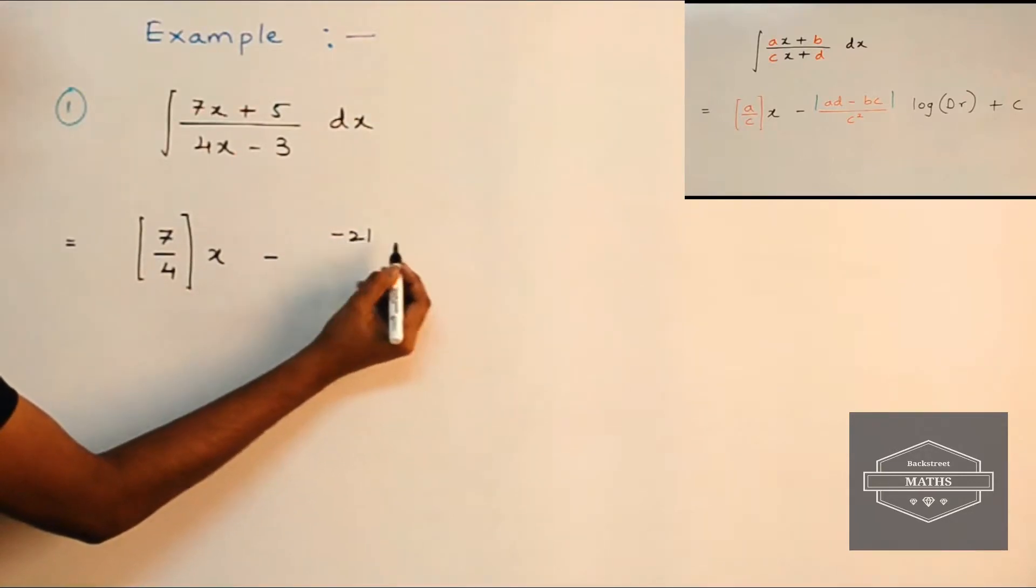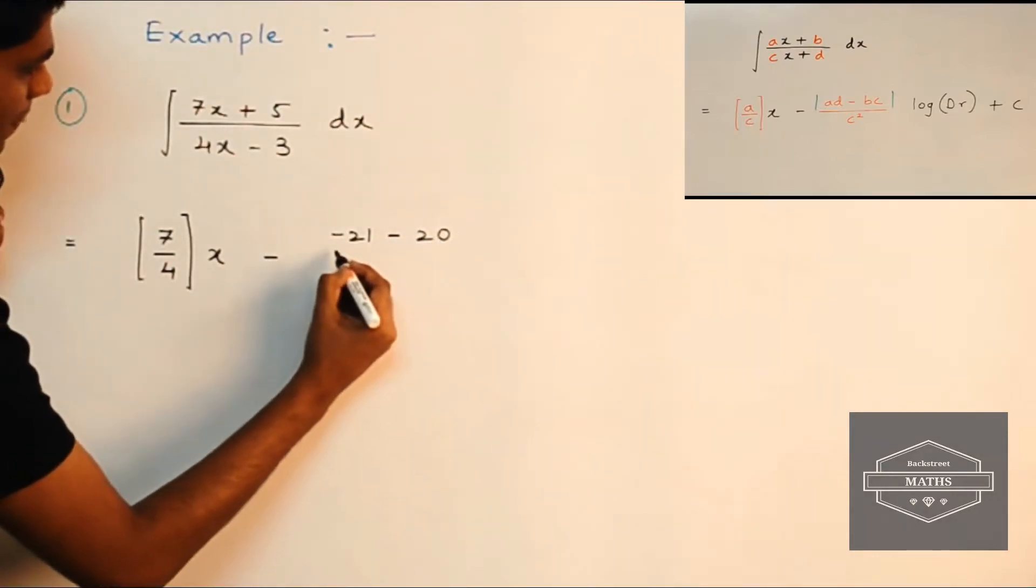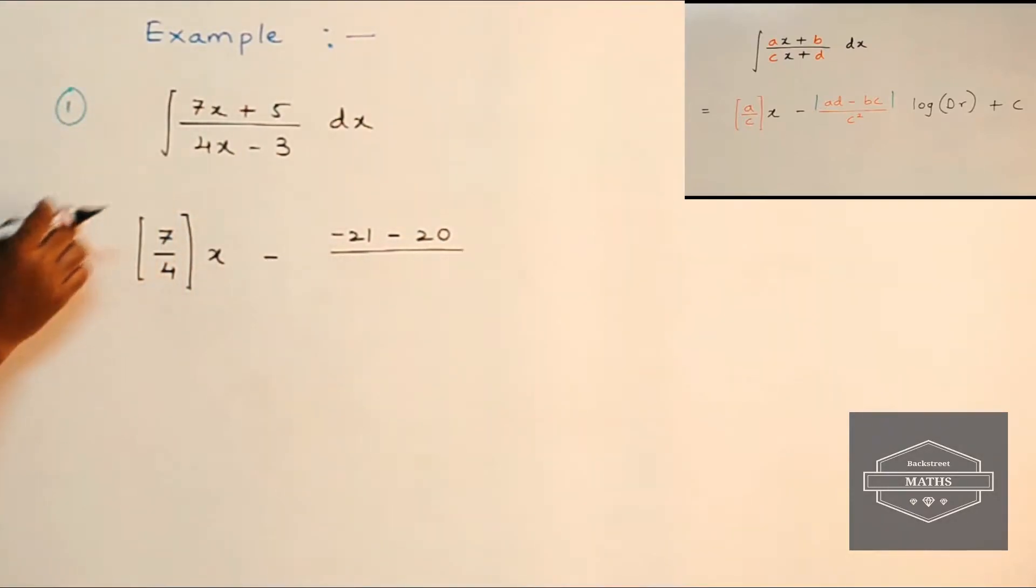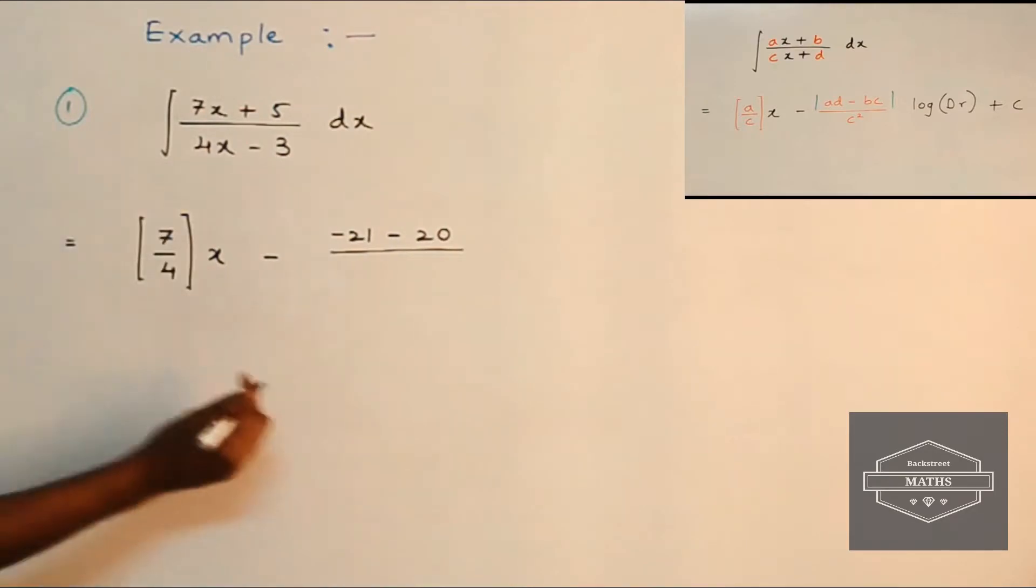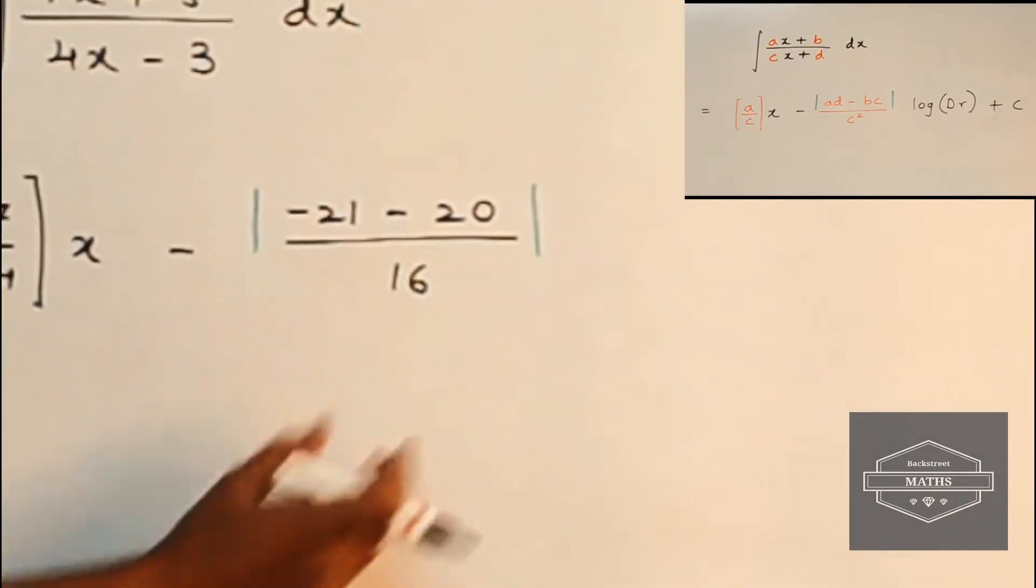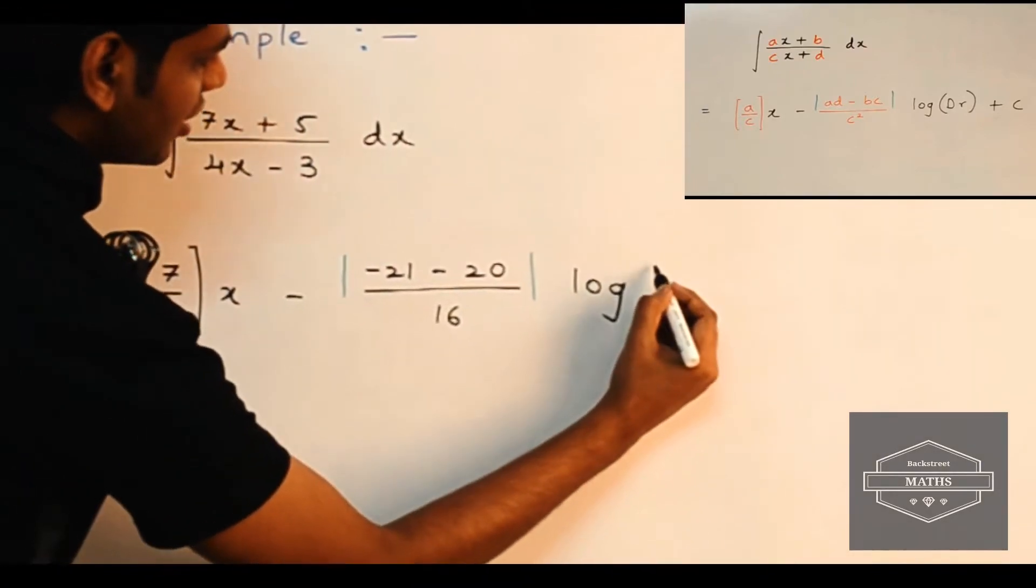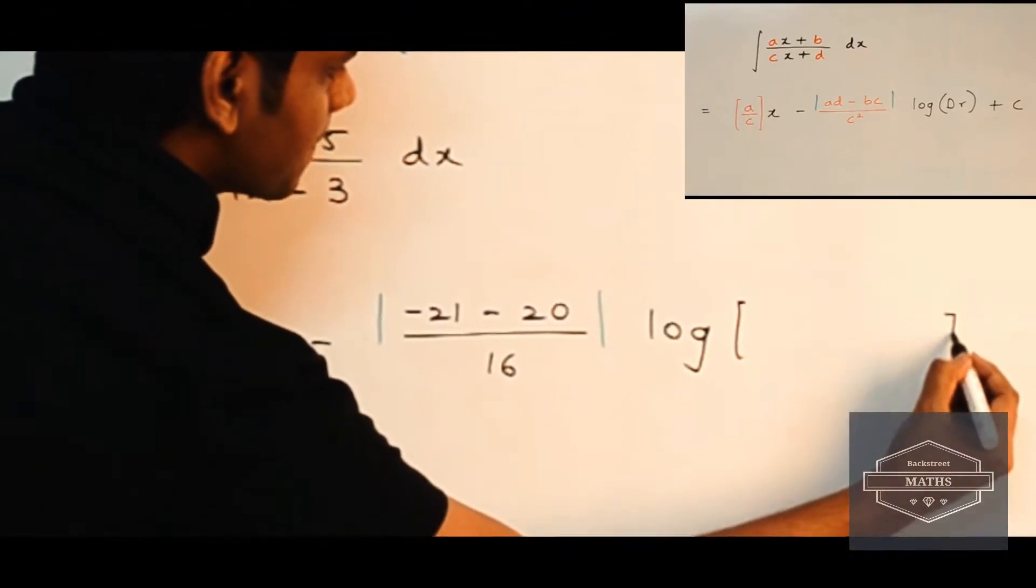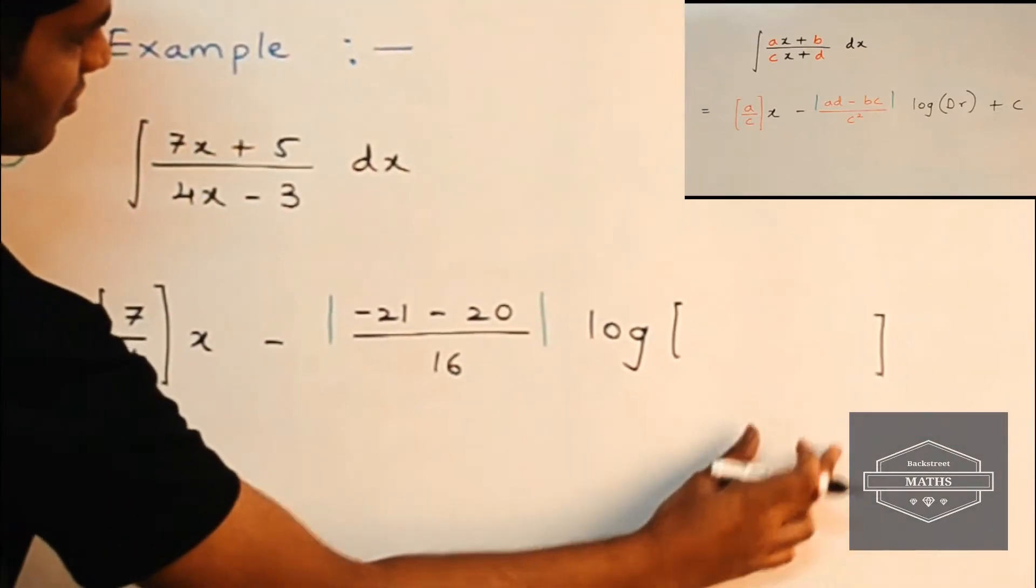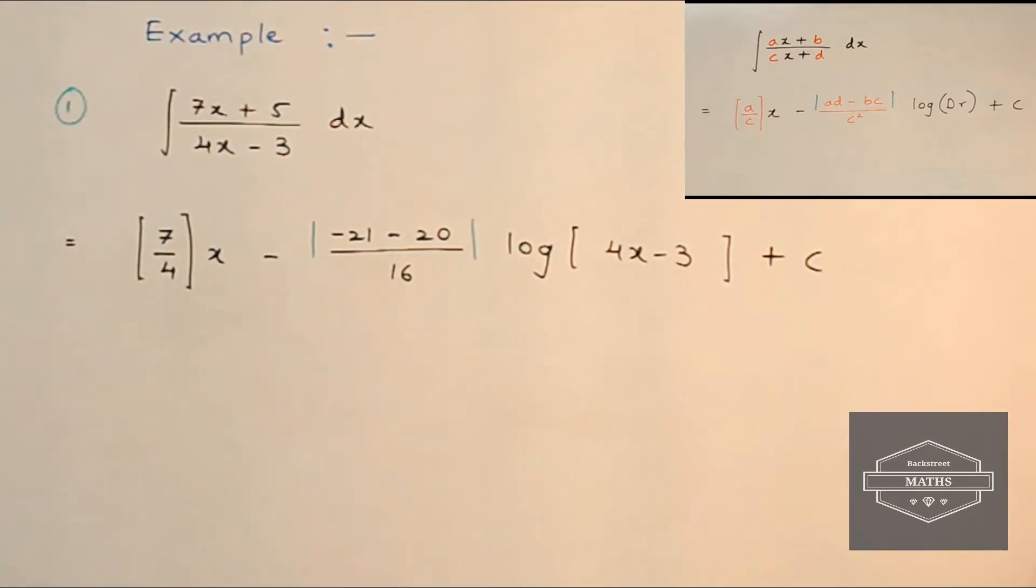In the second term we follow a crisscross pattern. So here it will be 7 into minus 3, so it will be minus 21 minus 5 into 4. 5 times 4 is 20 upon c square, so 4 squared is 16. And here we have to put a mod sign, and with the second term we multiply log of denominator. So here it will be log of, inside the bracket we have to write 4x minus 3. So here we go, the final answer is.